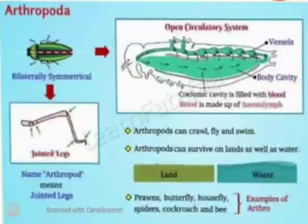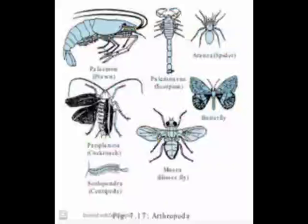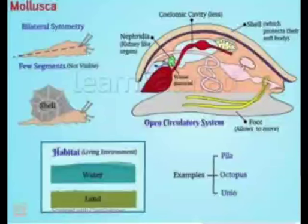Besides the common insects like cockroach and butterfly, we have some other organisms included in this phylum, that is prawns, scorpion, and crabs. They are also included in phylum Arthropoda because they also have the same characteristics — bilaterally symmetrical body, triploblastic, and segmented body.